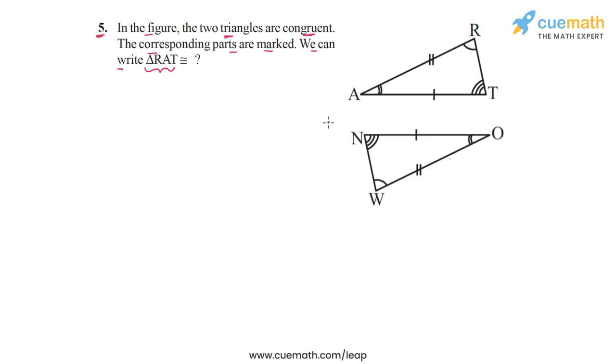And to do that, we can observe the angles, angle pairs which have been marked as equal. So we see that angle R is equal, marked equal to angle W. So we can say that the vertex R corresponds to the vertex W.